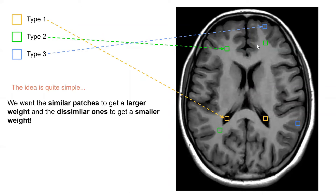For non-local means, the idea that Buades et al. came up with is that there is no reason to expect that the local neighborhood of a particular pixel would be more or less similar. For example, it could happen that at an edge — pixels at the CSF and white matter interface or white-matter–gray-matter interfaces — there are sharp transitions. Rather, you could group pixels that are not close to one another but far away and distributed in the image.